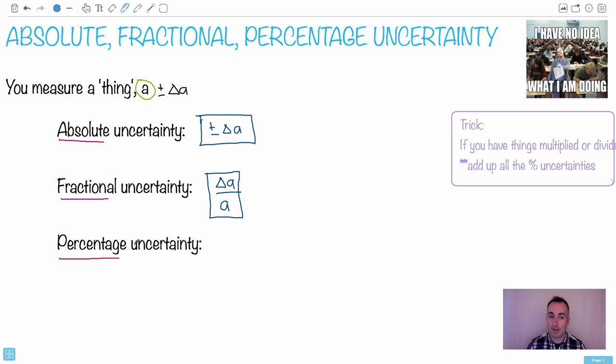Now the percentage uncertainty is just like the fractional uncertainty, except you multiply by 100. That's it. So in this case here we have delta A over A, and we have that times 100. And that's how we find the percentage uncertainty.